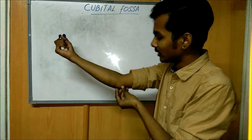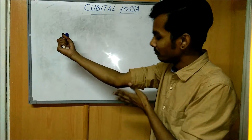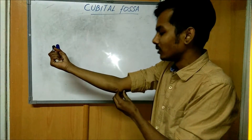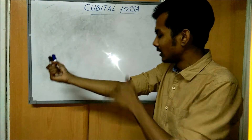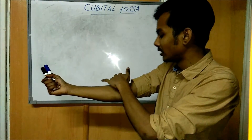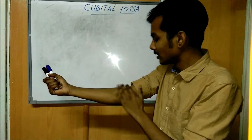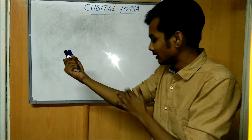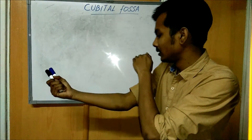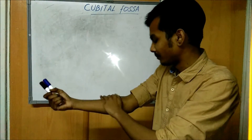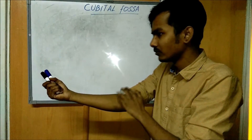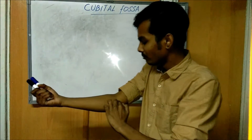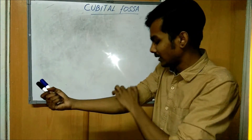This is the medial epicondyle — you can see and palpate the medial epicondyle and the lateral epicondyle. In between there is a fossa or depression, like between the arm and the forearm. It has a fossa depression and it forms a triangular shape.